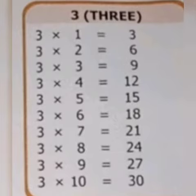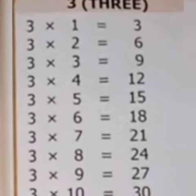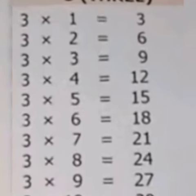3 1s are 3, 3 2s are 6, 3 3s are 9, 3 4s are 12.